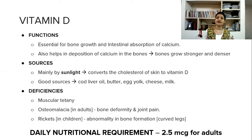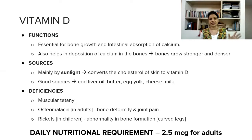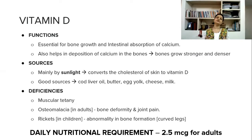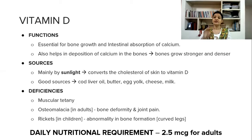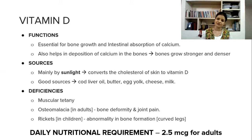In children, if vitamin D deficiency is found, the main condition is rickets — this is asked frequently in exams. Rickets is a bone formation abnormality where you can find curved bones, and even cow spine deformity. There is a lot of pain in bones and joints, and frequent fractures also happen because of softening of the bone. The daily nutrition requirement is 2.5 micrograms for adults.